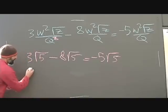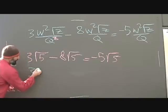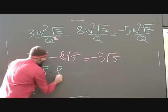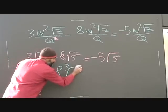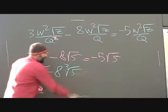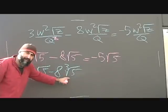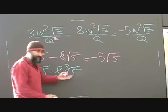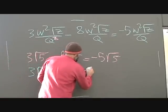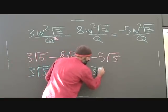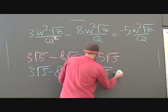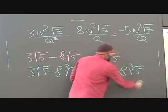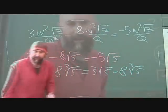If there's any difference between the radicals, you can't add or subtract them. For example, if you had 3 square root of 5 minus 8 times the q-th root of 5, you're stuck — you can't do anything with it. The answer would just be itself: 3 square root of 5 minus 8 q-root of 5.